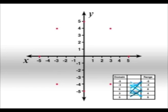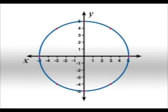But for some other values in the domain, like x equals negative three, there are two values that correspond, negative four and four. Wait till I draw the graph of the relation. Ha, a circle.